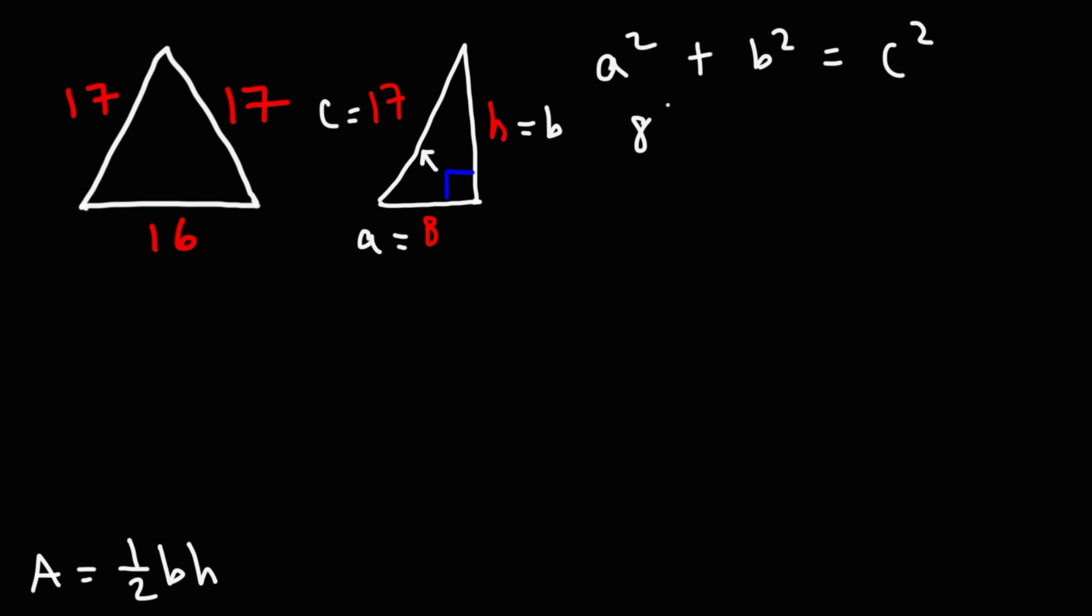So, now, let's plug in what we have. 8 squared plus b is going to be h, so this is h squared. And c is 17. Now, 8 squared. 8 squared is 8 times 8, which is 64.